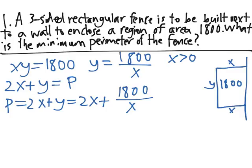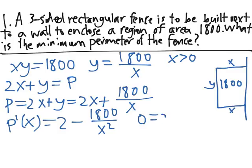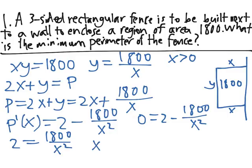Now to find a minimum of P, we want to take the derivative of P with respect to x. P prime of x equals 2 minus 1800 over x squared, so that we can identify where the critical points are. The derivative is not defined at 0, but our function wasn't defined at 0 either, so that's not a point we have to consider. To find the rest of the critical points, we set this equal to 0. 0 equals 2 minus 1800 over x squared, which is equivalent to 2 equals 1800 over x squared, which means that x squared equals 1800 over 2, which equals 900.